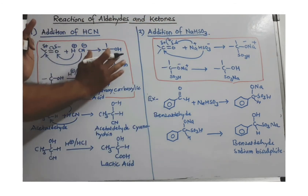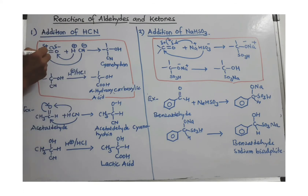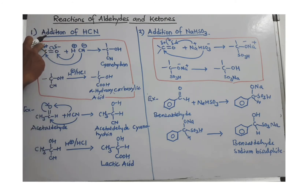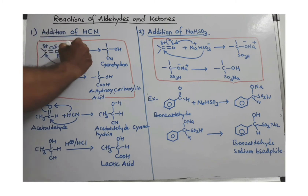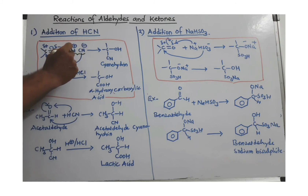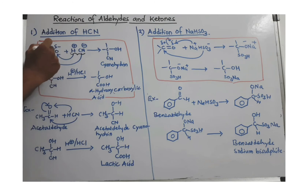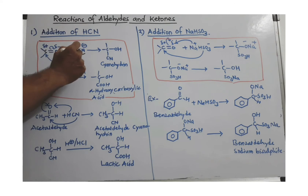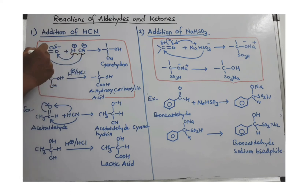First, let's look at addition of hydrogen cyanide. Either aldehyde or ketone has a carbonyl group in common. The carbonyl group always has a partial positive charge on carbon and partial negative charge on oxygen. In hydrogen cyanide, hydrogen carries a positive charge and cyanide carries a negative charge. So hydrogen will go to the oxygen and join there with the help of a lone pair or the pi bond, and the cyanide goes to the carbonyl carbon.